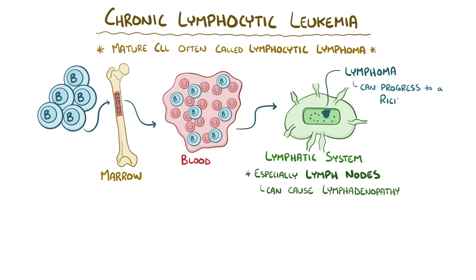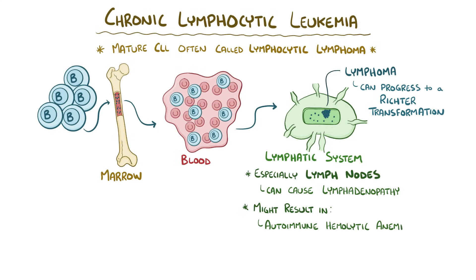Further progression might take the form of a Richter transformation, where those small, pretty harmless lymphomas collect into sizable masses that damage the body. And because B cells normally work in the immune system, the reduced or adverse functioning of CLL cells might result in autoimmune hemolytic anemia, where the cells attack the body's own red blood cells and kill them off, or hypogammaglobulinemia, where the cells don't produce enough gamma globulins.